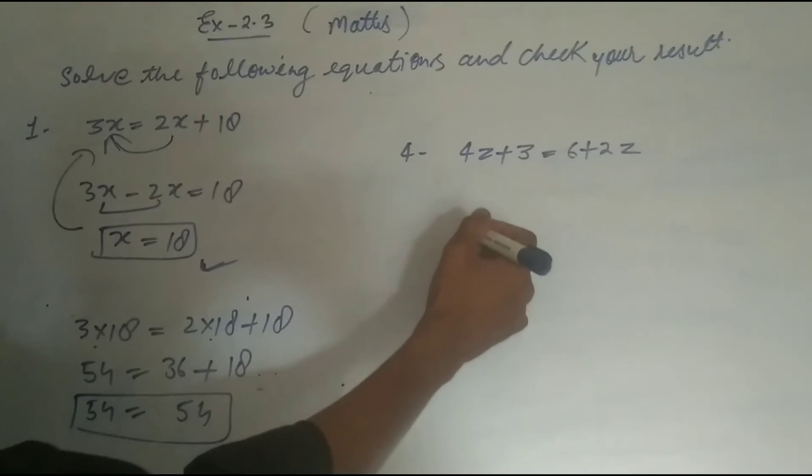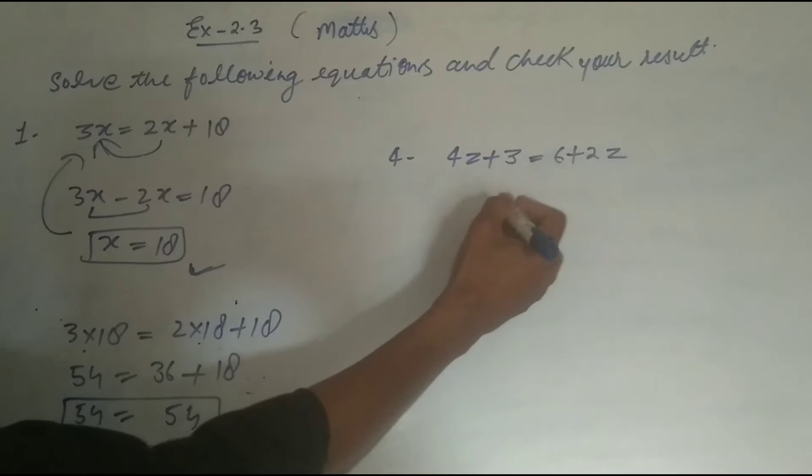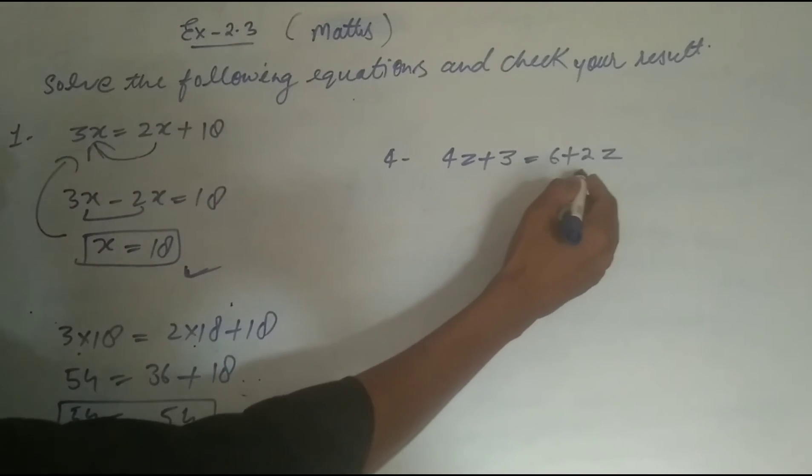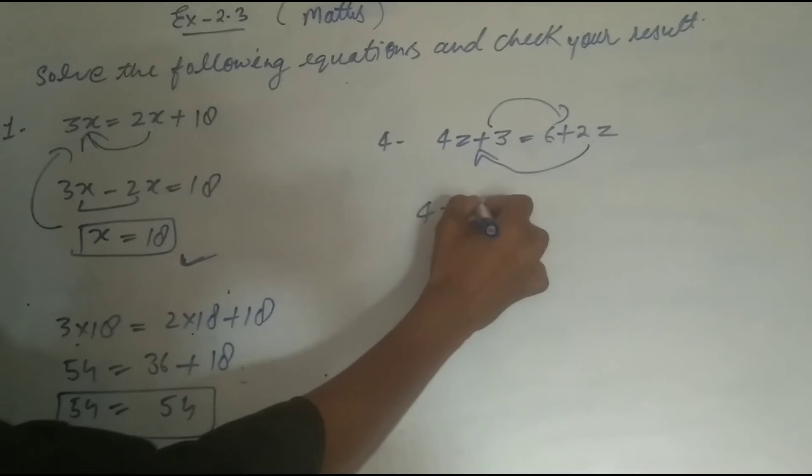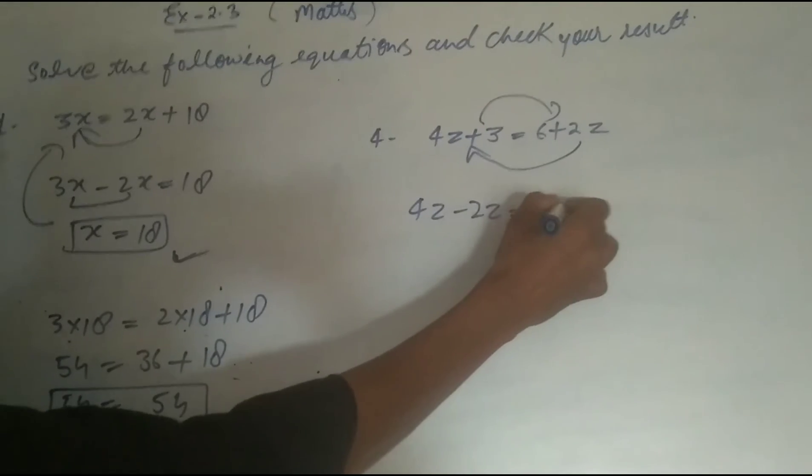Now we solve question 4. Given: 4z + 3 = 6 + 2z. We take 2z to the opposite side and 3 also to the opposite side: 4z - 2z = 6 - 3.